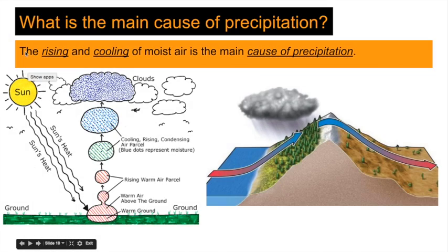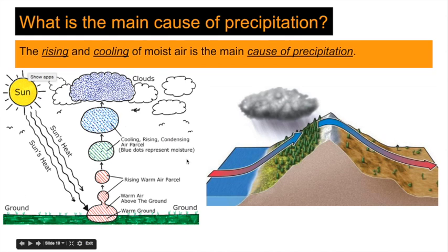What is the main cause of precipitation? The rising and cooling of moist air is the main cause of precipitation. Air rises when it is heated. The sun heats the surface of the Earth, which heats the air above it; that air rises, and cooler air replaces it. As that air rises, it cools — cool air holds less water than warm air, causing condensation, so the vapor is forced out, causing clouds. Air also rises because it is forced over a mountain range or areas of high elevation. As it rises, it cools, forcing the water vapor to condense and precipitate out. The leeward side of the mountain is then dry, because precipitation has been forced out on the windward side.